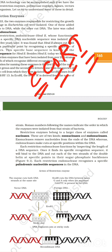Restriction enzymes belong to the larger class of enzymes called nucleases — exonuclease removes nucleotides from the ends, whereas endonuclease cuts at a specific position within the DNA. Each restriction endonuclease functions by inspecting the length of the DNA sequence. Once it finds its specific recognition sequence, it binds to the DNA and cuts both strands of the double helix at specific points in the sugar-phosphate backbone.